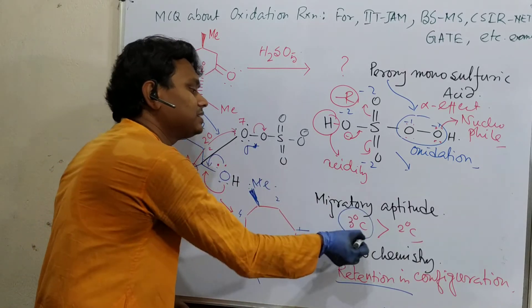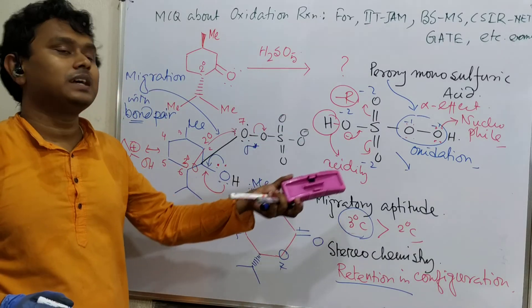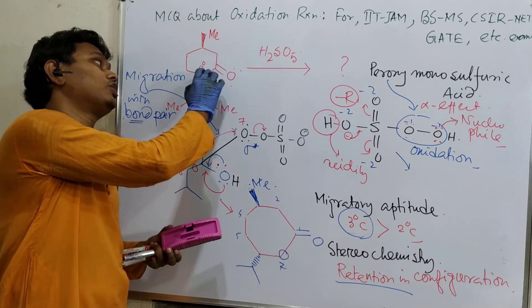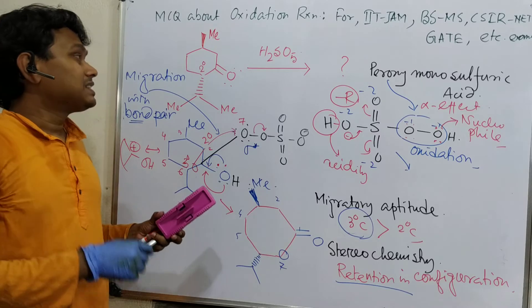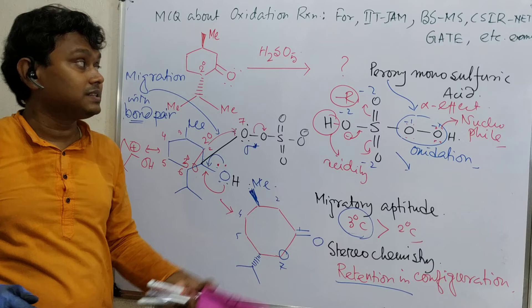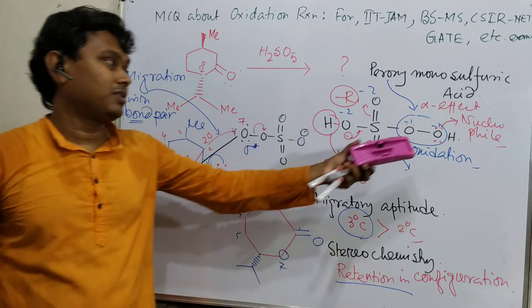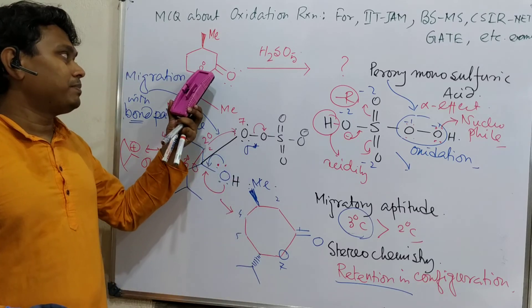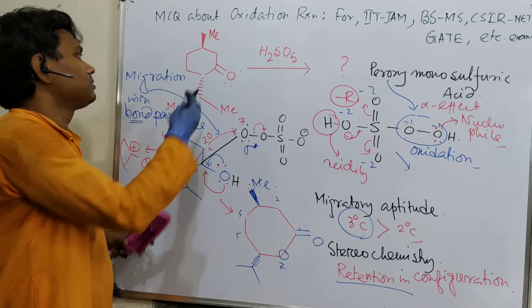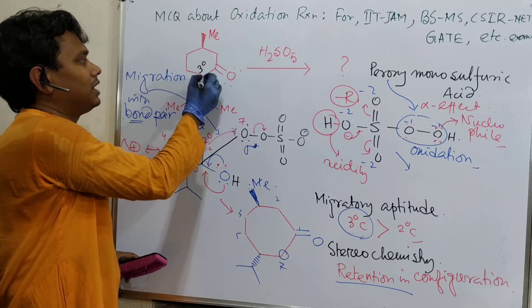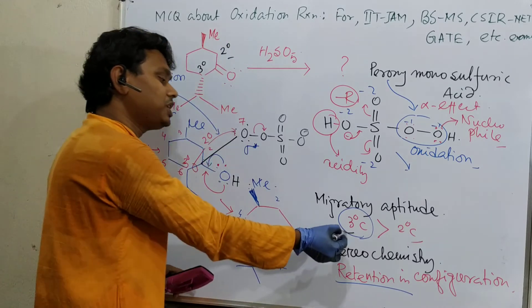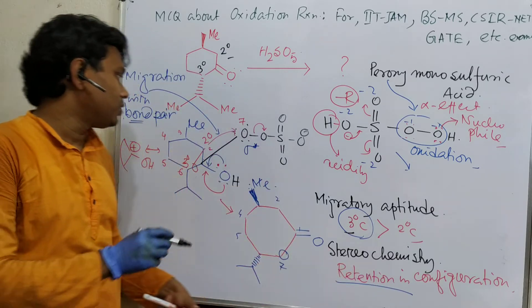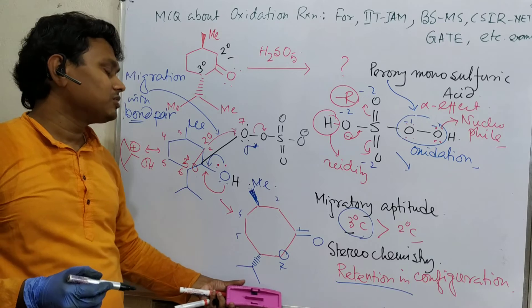Why is tertiary greater than secondary for migratory aptitude? Please visit the dedicated lectures — I will provide the link at the end of this discussion. What we have learned today: first, Baeyer-Villiger oxidation of a cyclic ketone results in lactone formation. Second, we used peroxy monosulfuric acid, which serves both roles — as an acid using the proton, as a peroxide using the peroxy side — and ultimately it gets reduced, oxidizing the ketone into an ester. Here, the migratory aptitude of tertiary carbon is higher than secondary, so that group migrates. And retention of configuration occurs because migration happens with the bond pair.